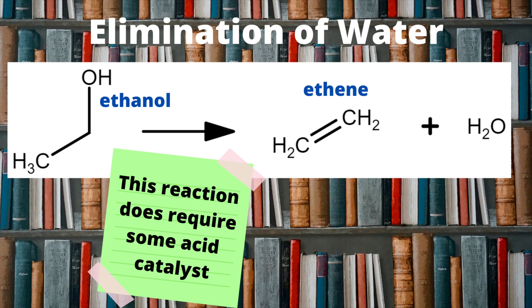The first reaction we're going to look at is the elimination of H₂O from alcohols in the presence of an acid catalyst such as H₃PO₄ (phosphoric acid) or H₂SO₄ (sulfuric acid), along with heat. This changes the alcohol functional group to that of an alkene. In the equation on screen, ethanol forms ethene, with the eliminated water molecule as a co-product alongside the alkene.